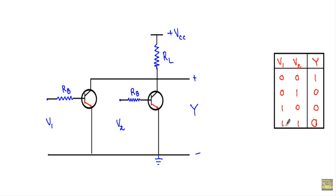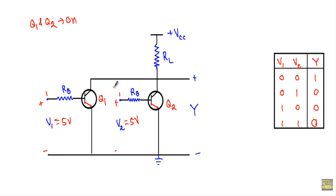Now consider the last case: V1 = 1 and V2 = 1. I apply 5 volt to the base-to-ground terminal for both Q1 and Q2, so both transistors are in the ON state. Both collector-emitter terminals act like closed switches, creating two short paths from the output to ground. Therefore the output voltage = 0 volt due to these short circuits, so the output stays at logic 0 for input combination 1 1.